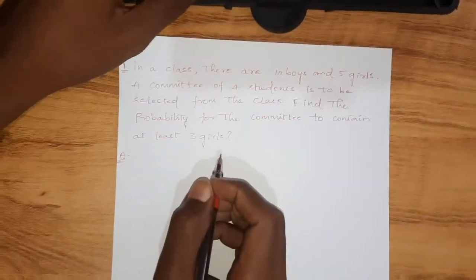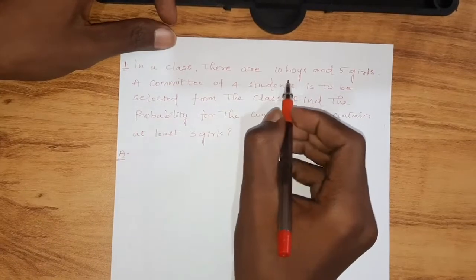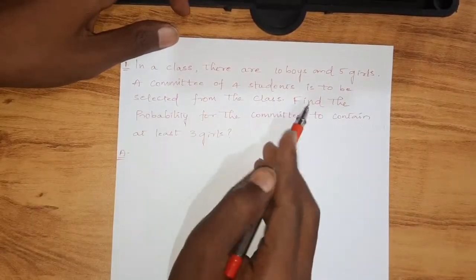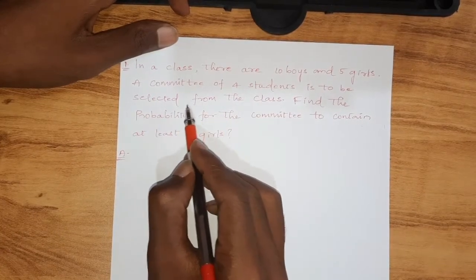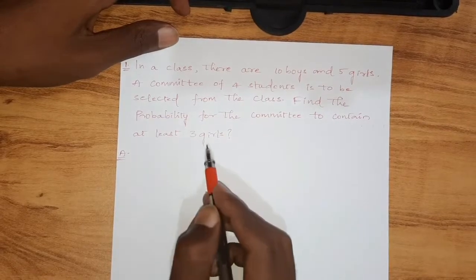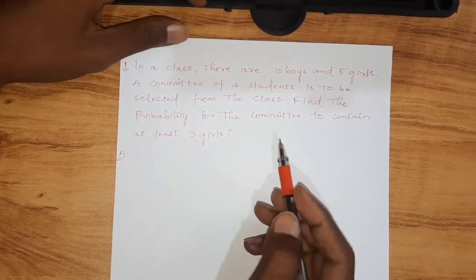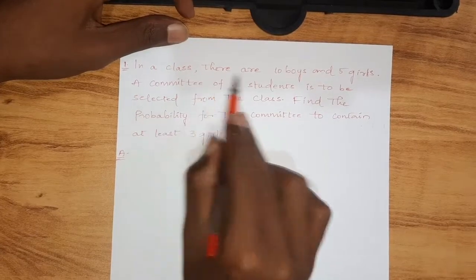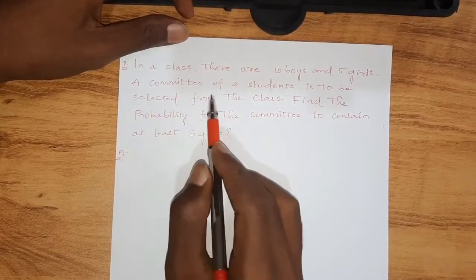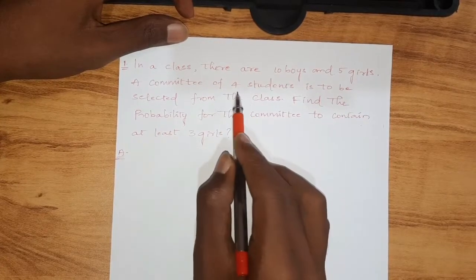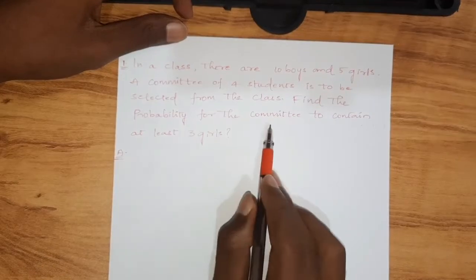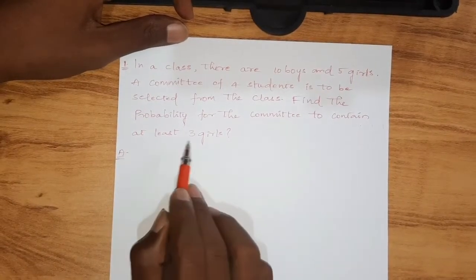The 1st problem: in a class, there are 10 boys and 5 girls. A committee of 4 students is to be selected from the class. Find the probability for the committee to contain at least 3 girls. This means we need to form a committee of 4 students and find the probability that it contains at least 3 girls.